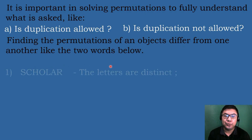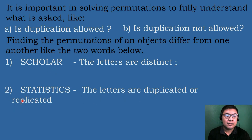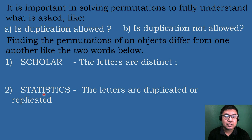Like the two words below: the first word is 'scholar' — the letters are distinct, meaning they consist of different letters. The second word is 'statistics' — the letters are duplicated or replicated. Letter S is repeated three times, letter T is also repeated three times, and letter I is repeated two times.